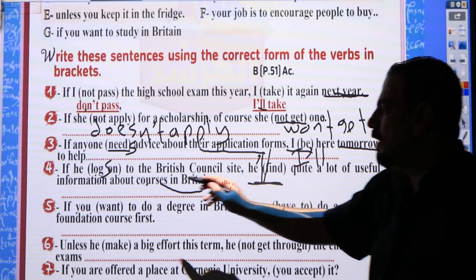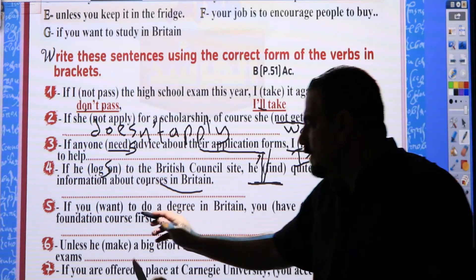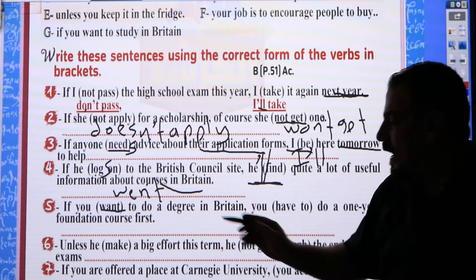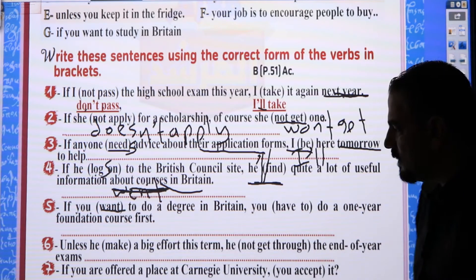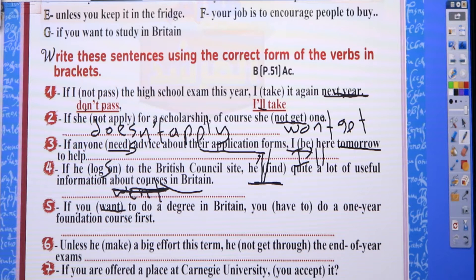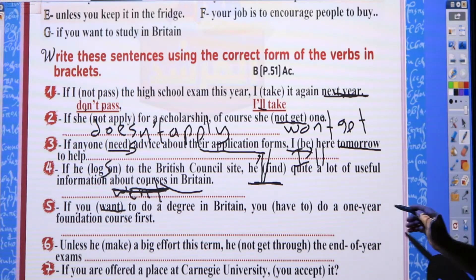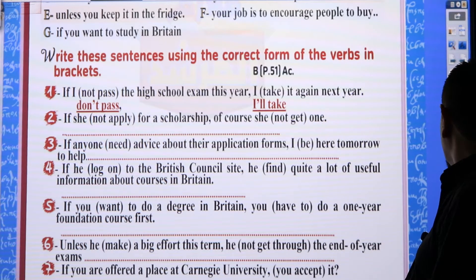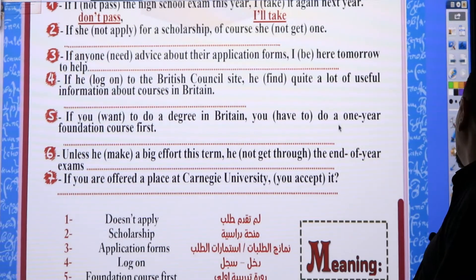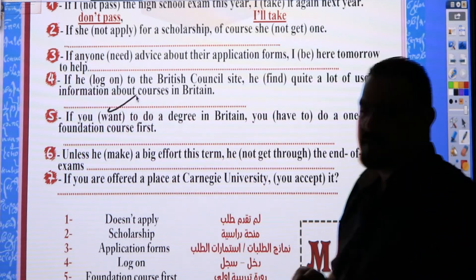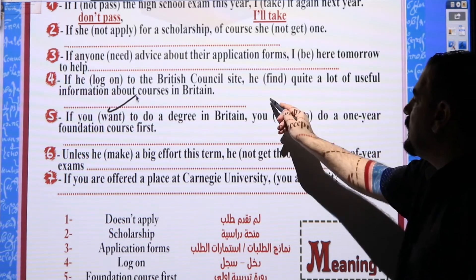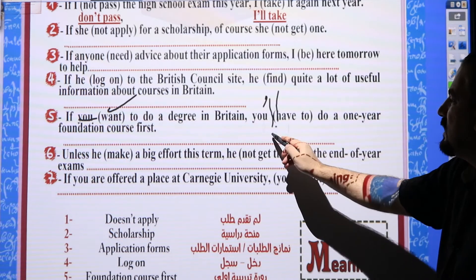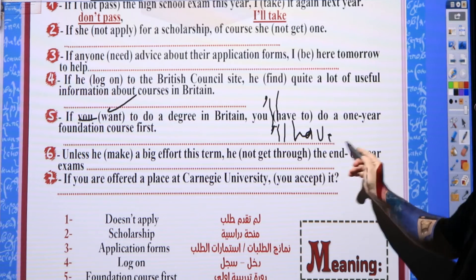Note the difference between 'want' and 'went' — 'went' is past tense of 'go', not relevant here. Number five: 'If you want to do a degree in Britain, you will have to do a one-year foundation course first.' Here 'you' takes the plain modal, so it becomes 'you will have'.